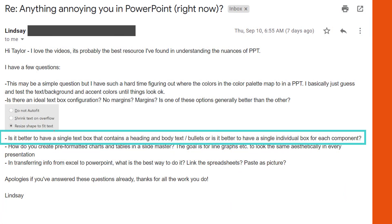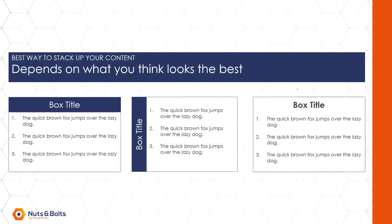Now, for Lindsay's last question: should you use a single text box containing heading, body, and bullets, or individual text boxes for each component? Remember, a shape and a text box are basically the same thing in PowerPoint — just a little formatting difference. It really depends on what looks best. You could use one object with different fonts for the title and content. I personally prefer to use a text box as the title and a different colored shape as the content, so I can position them independently — rotate left, rotate right, et cetera — rather than cramming everything into one.